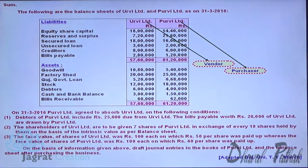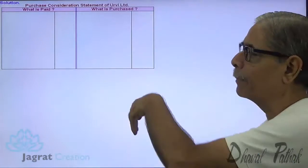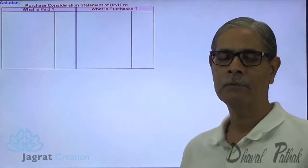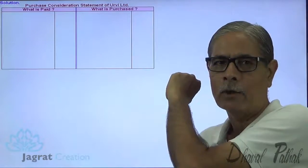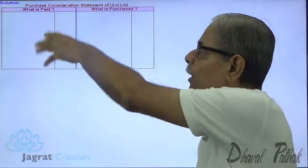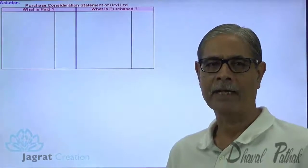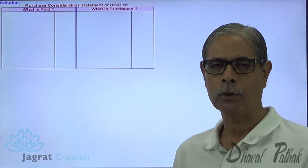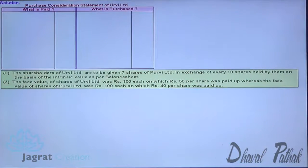Now, first let me start with the working. Here I am going to prepare a working note for the purchase consideration. Net assets are going to be recorded here and payment will be recorded at intrinsic value. Let me start with the sum.